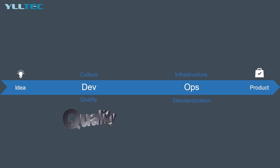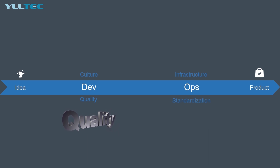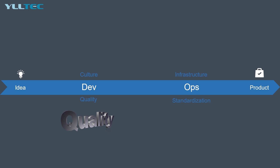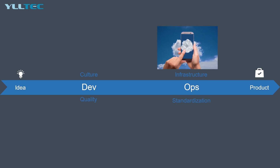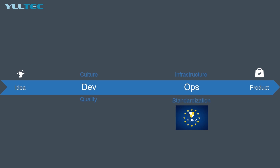You also want to address quality from the beginning — not only the functional requirements, but also the non-functional requirements. Things like structure and process are key ingredients towards a successful quality outcome. Infrastructure is also important: should you go cloud? How about performance and security? Think about those early. Also consider standardization: are you following GDPR and best practices?